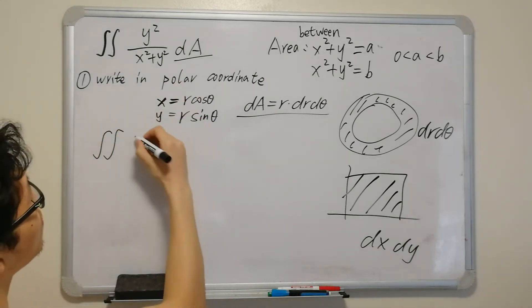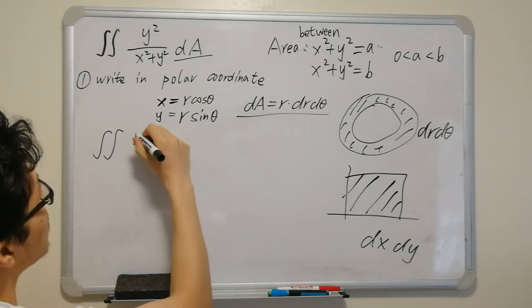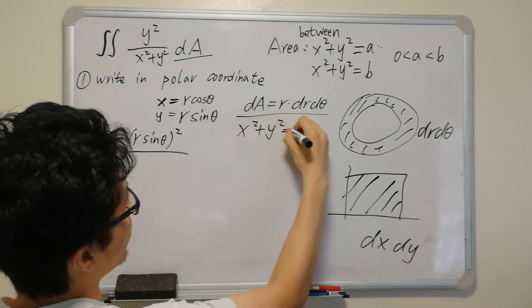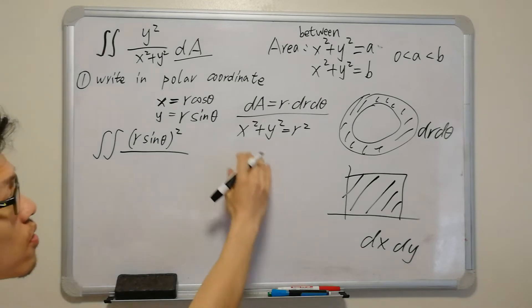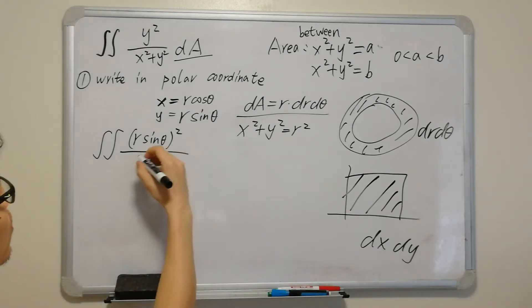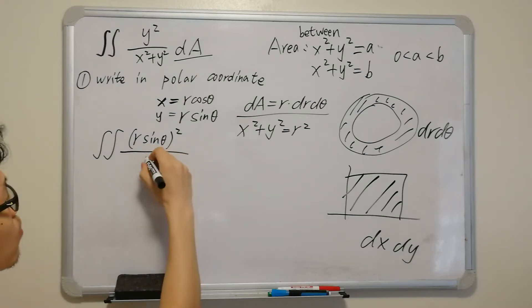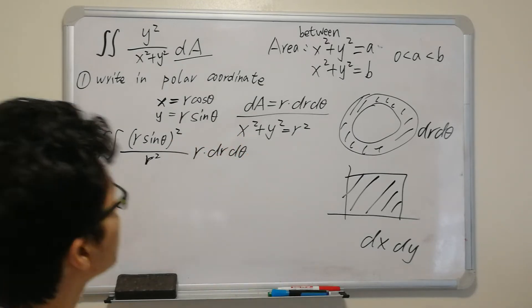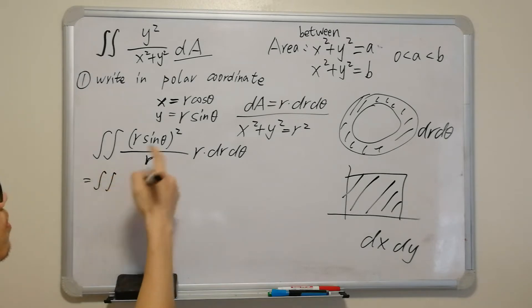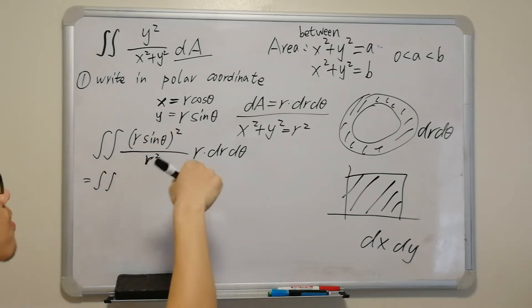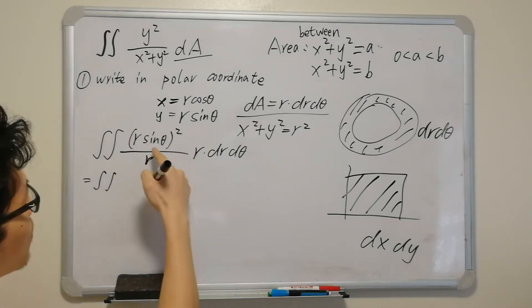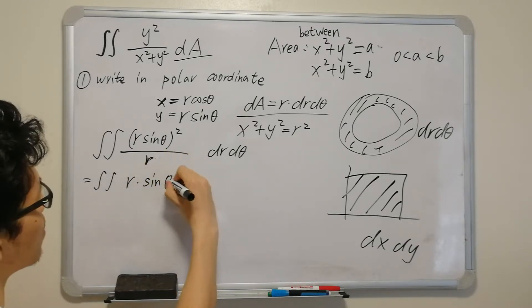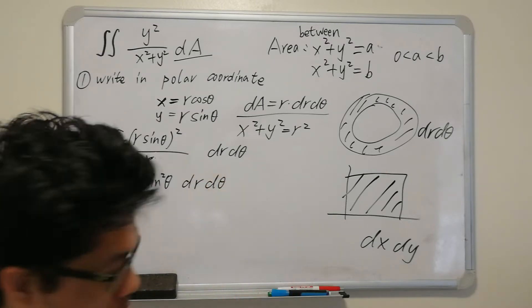We can now rewrite the integral. Since y = r sinθ, we have y² = r² sin²θ, and x²+y² = r². So the integrand becomes (r² sin²θ)/r², and with dA = r dr dθ, we cancel the r² and get r sin²θ dr dθ.